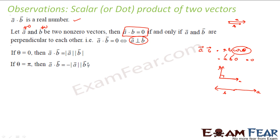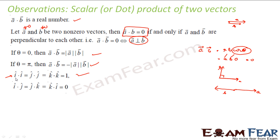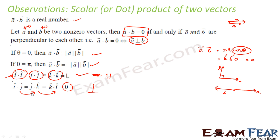That is why when you talk about i dot i, j dot j, or k dot k, you get one — because they are all in the same direction. But when you say i dot j, j dot k, or k dot i, you get zero because they are perpendicular. So i dot j equals j dot k equals k dot i — any cross combination gives zero. Please note: when you say i dot i you get one, j dot j is also one, k dot k is also one, but i dot j becomes zero and j dot k also becomes zero.